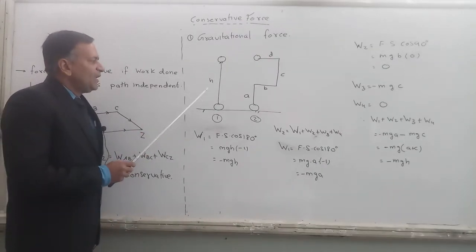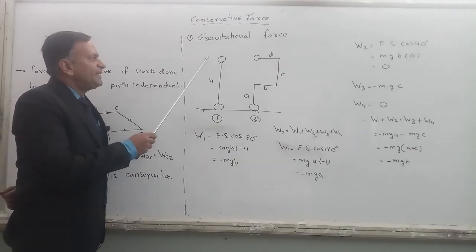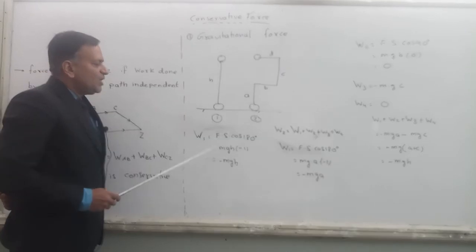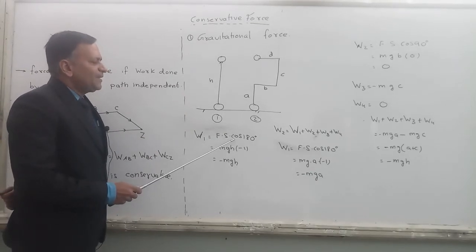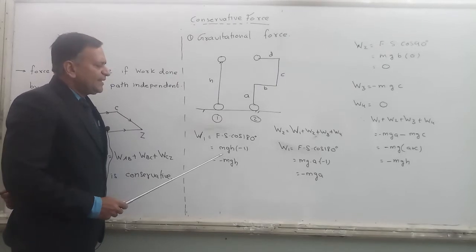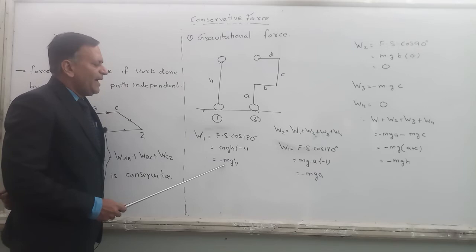So I have a body of mass M which is moved up to a distance H by a straight path. You know what is the work done? Force into displacement. The angle between them is 180 degrees. So this gives MG times H times minus 1, and work done in this path is equal to minus MGH.